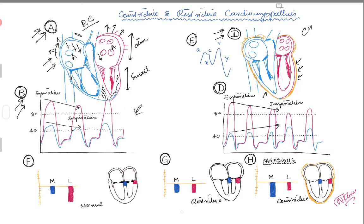The LV waveform is shown in red and the blue waveform is your RV. These two arrows going down indicate when a person is going from expiration to inspiration. What happens during inspiration is decreased filling of the right and left ventricle in restrictive cardiomyopathy, because of increased intrathoracic pressure.